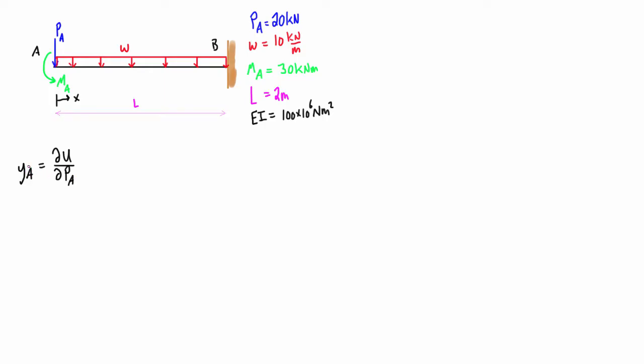So in general terms you'd see like yj is equal to the partial derivative of the energy with respect to pj. But if we know the point, like it's at point A, we just write in the subscript A.